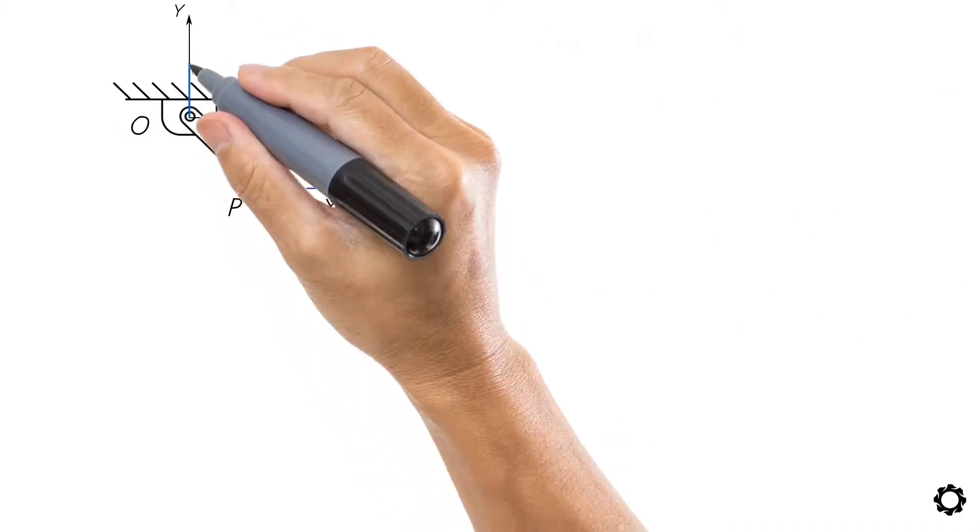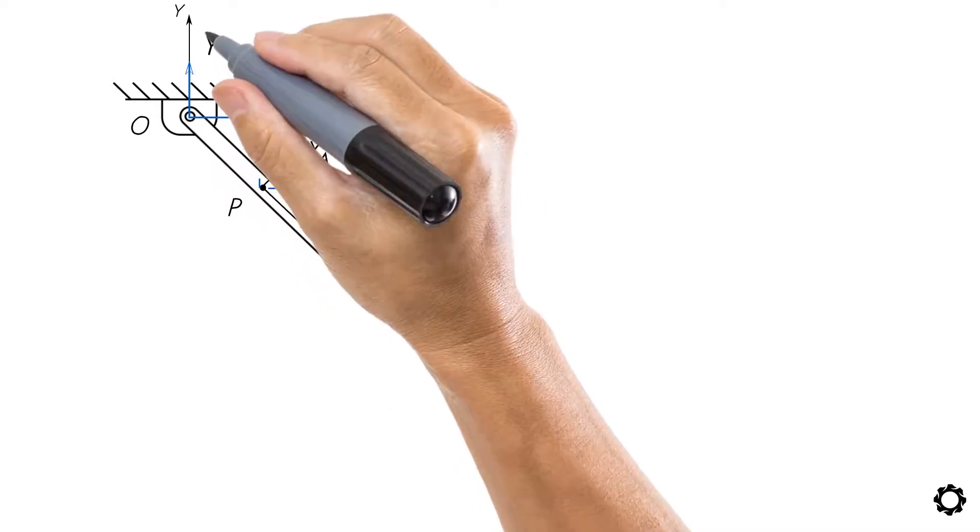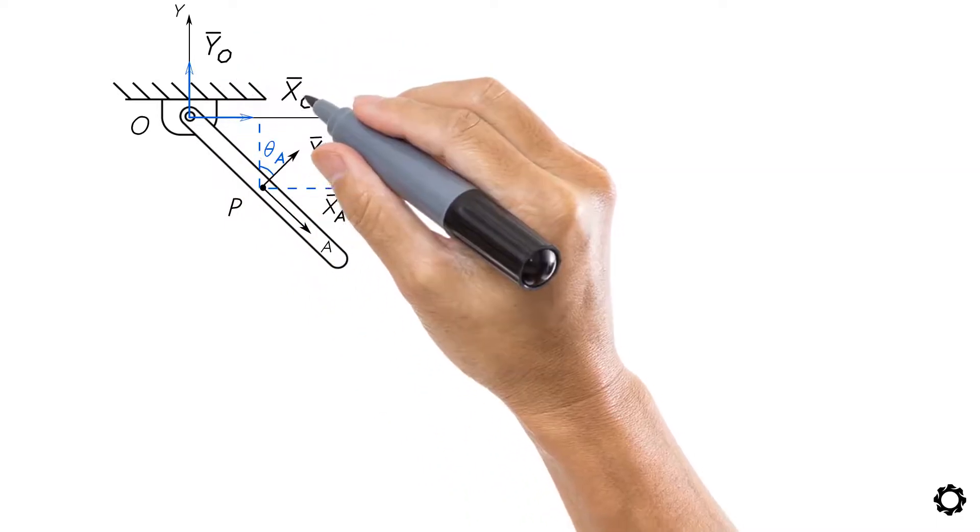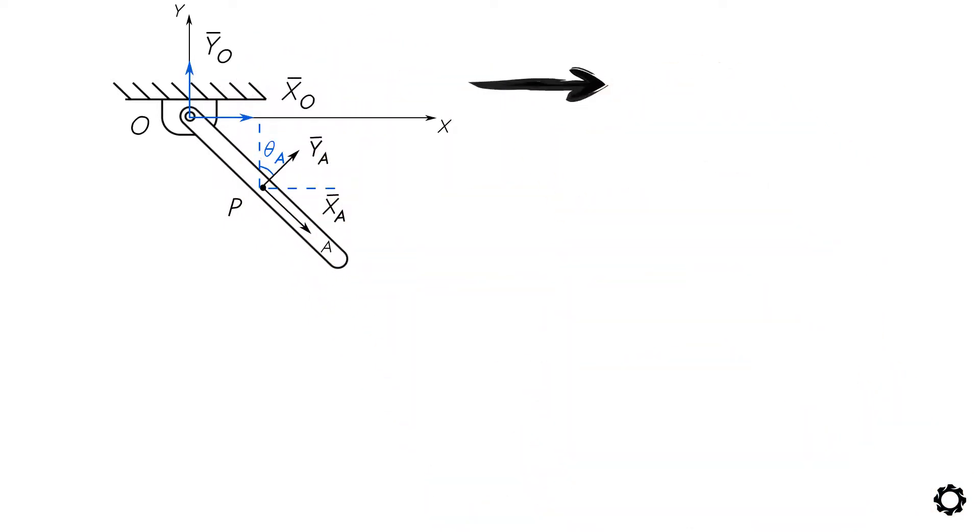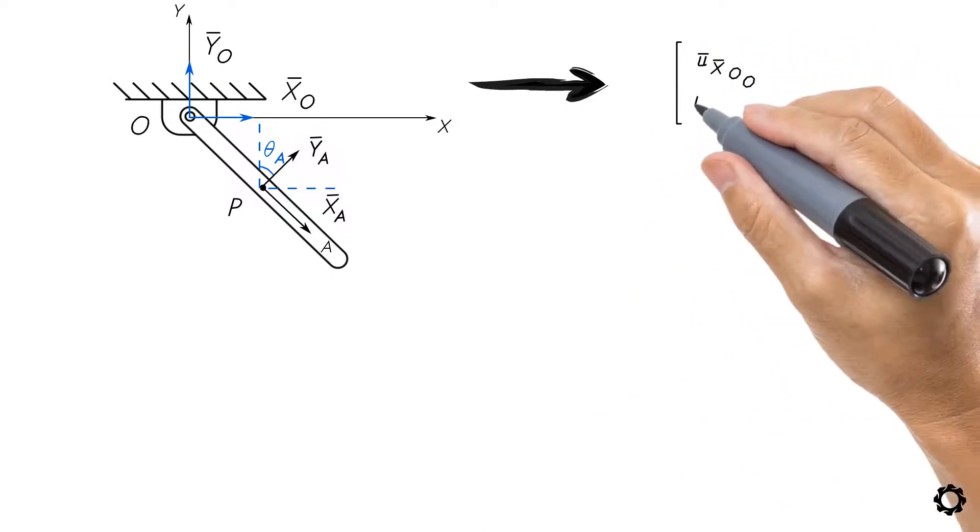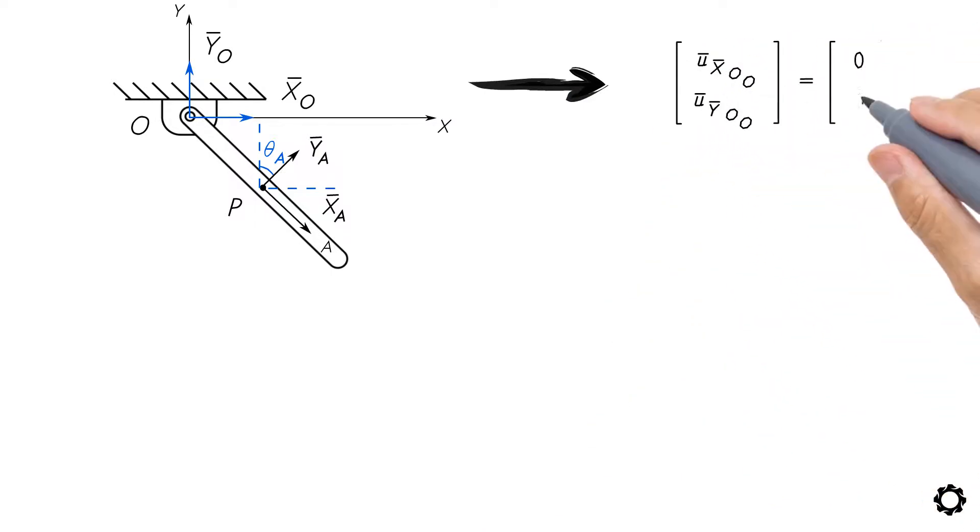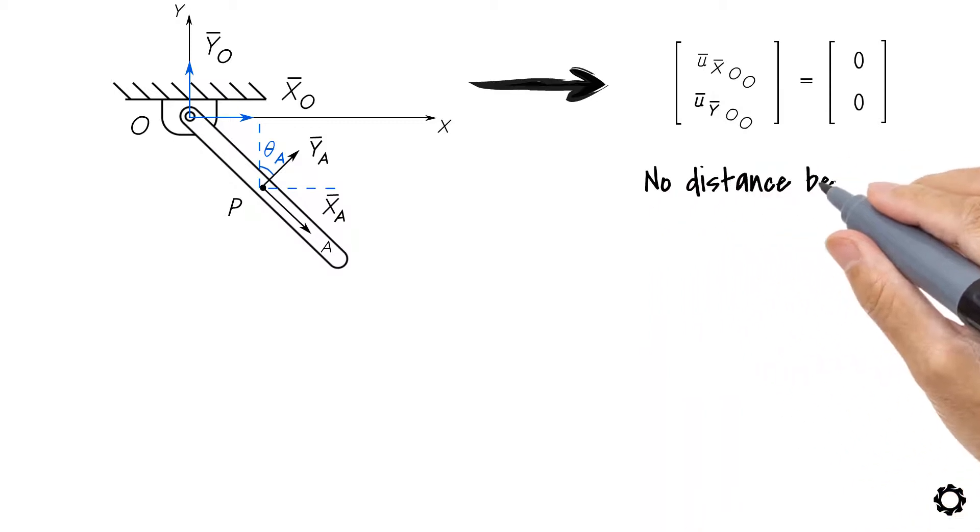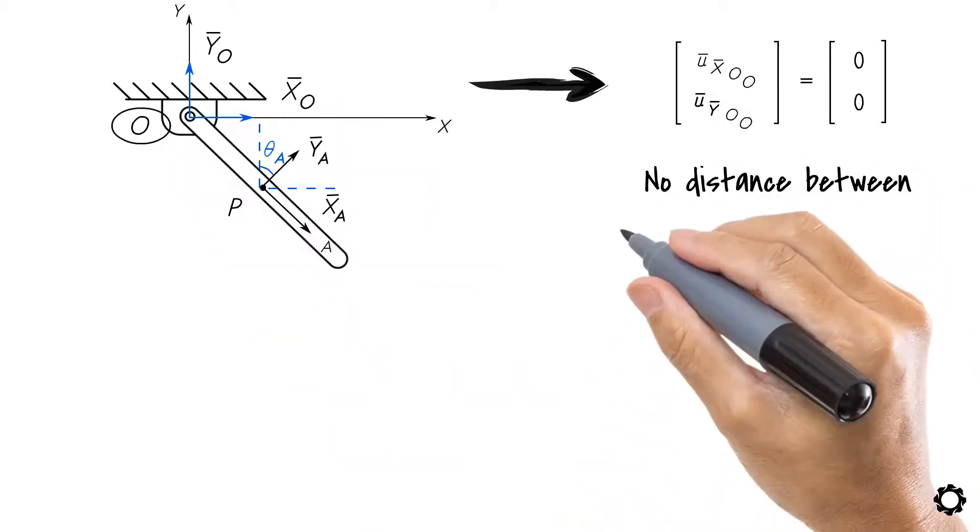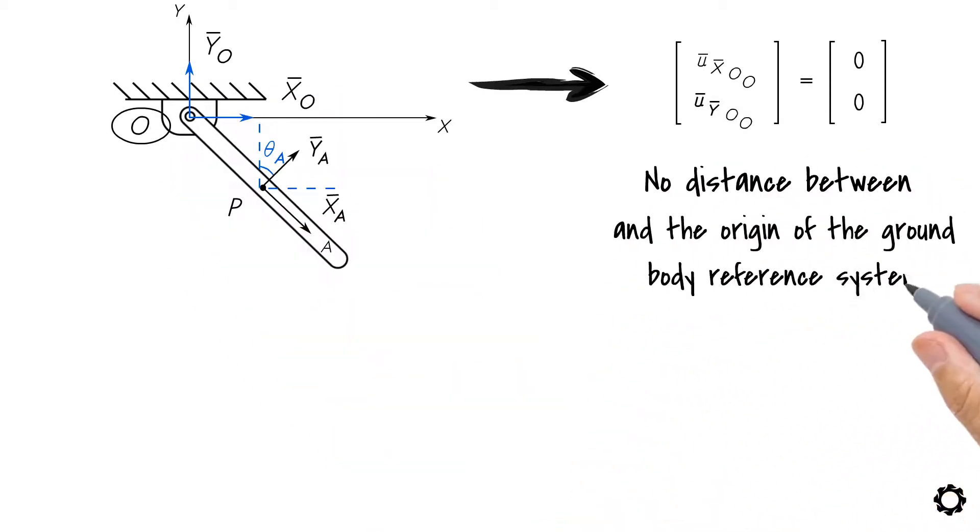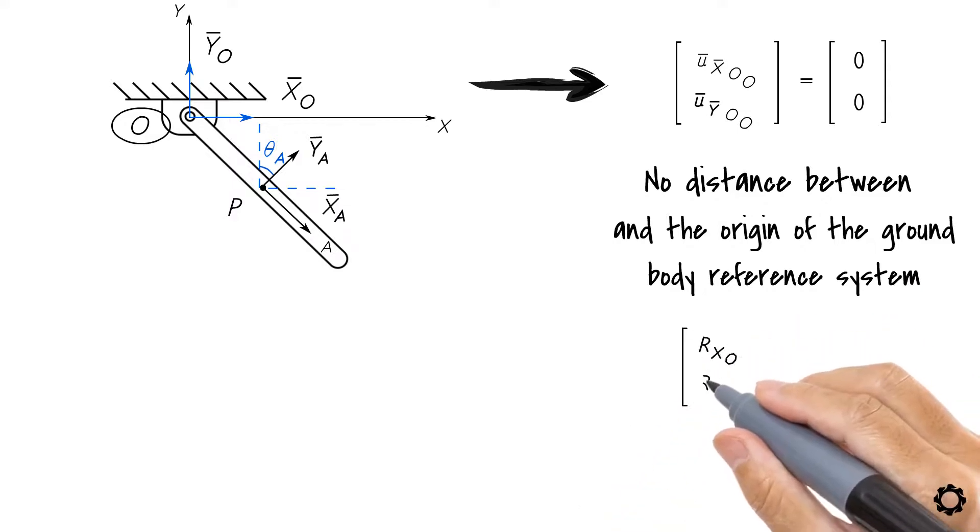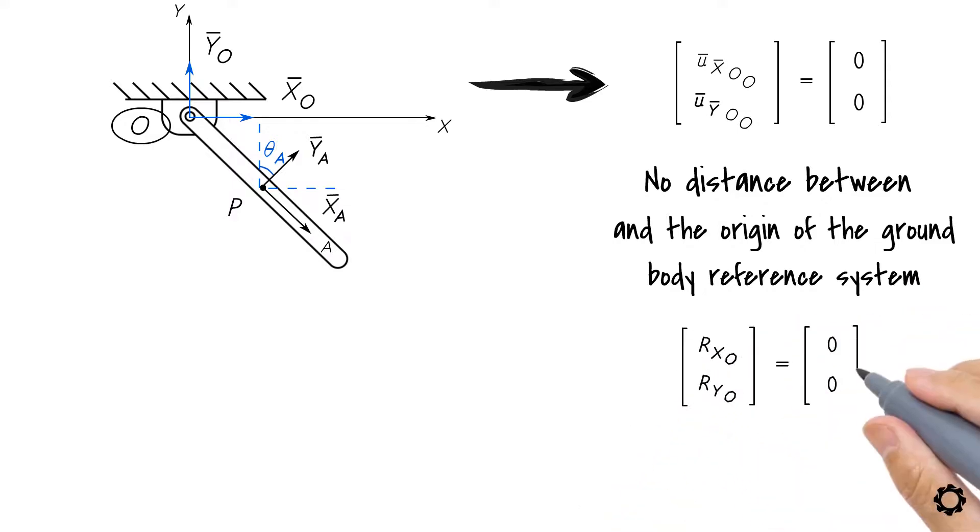First, we know that the origin of the ground body reference system coincides with the origin of the inertial frame of reference. This causes the term [U_bar_X_OO, U_bar_Y_OO] to be equal to [0, 0] because there is no distance between the point under study and the origin of the ground body reference system. And second, we know that the term [Rx_O, Ry_O] is also equal to [0, 0] because that's exactly the point we have taken as the origin for our calculations.